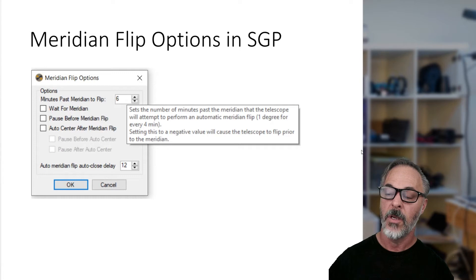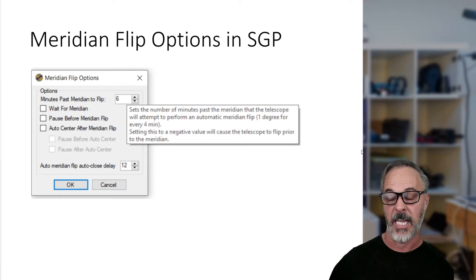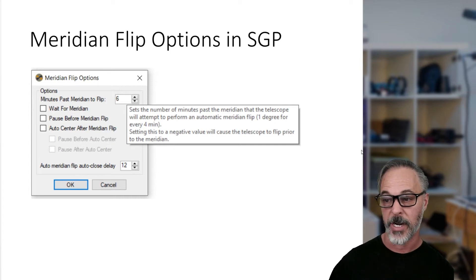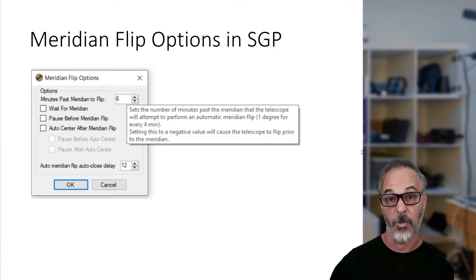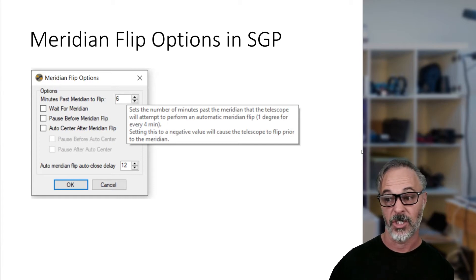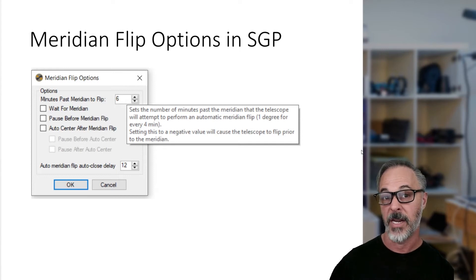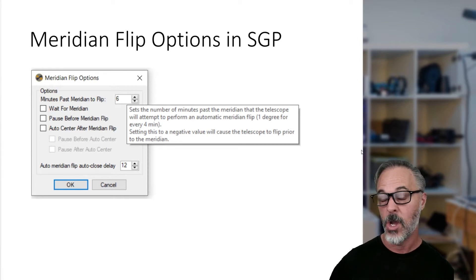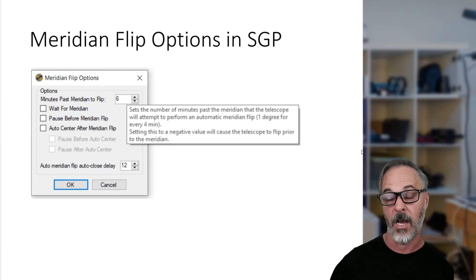The first option is 'minutes past meridian to flip.' I've hovered my mouse over the field so you can read the tooltip — this is the most important setting in Sequence Generator Pro for meridian flips and the one we're going to focus on. An important note: this is measured in clock minutes, not arc minutes or degrees. So we are comparing apples to apples with our Gemini settings when we configure this option.